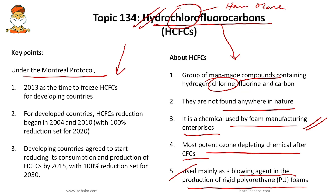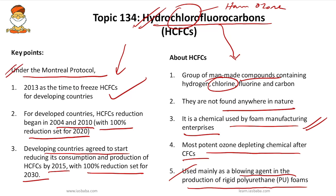Under the Montreal Protocol, 2013 was set as the year to freeze HCFC consumption and production for developing countries. For developed countries, reduction of HCFC consumption and production began in 2004 and 2010, with 100% reduction set for 2020. For developing countries, reduction began in 2015 with 100% reduction targeted for 2030.